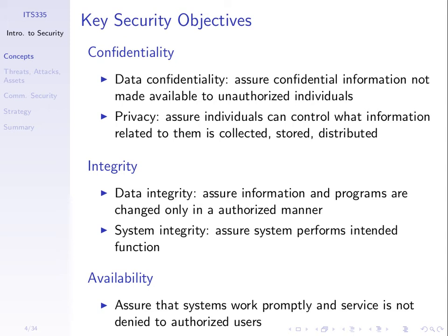Sometimes in confidentiality we also talk about privacy. Here we'll use privacy to mean keeping your actions secret. Data confidentiality is about keeping your data secret and not letting unauthorised people access it. Privacy means keeping your actions secret — for example, keeping the set of websites you've accessed, the URLs, when, and how often secret. Often privacy and data confidentiality are grouped generally as confidentiality. In this course we'll look at techniques for providing confidentiality.